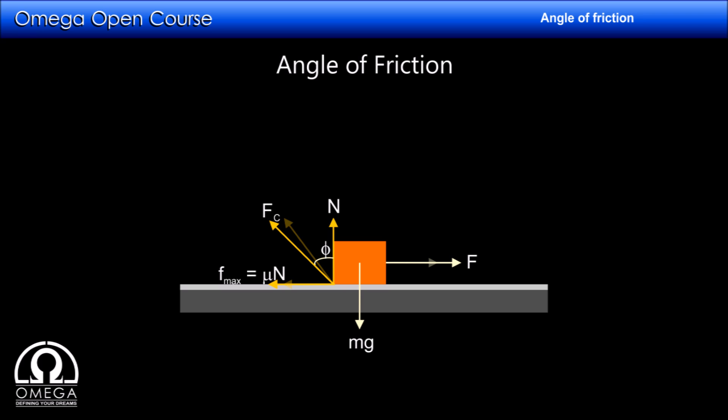the force of friction is equal to mu times normal. If the angle of friction at this instant is phi, then tan phi is given by mu N divided by N, that is mu. Which implies phi is equal to tan inverse mu. Thus tan inverse mu is the maximum value of angle of friction.